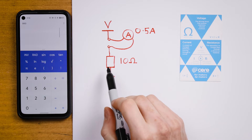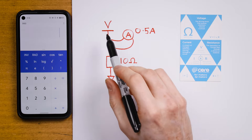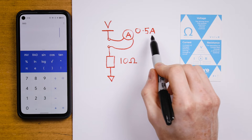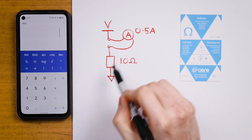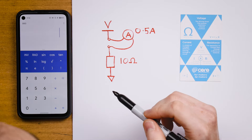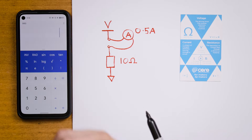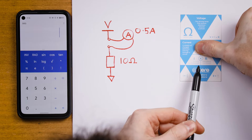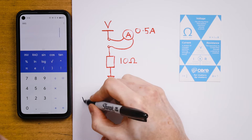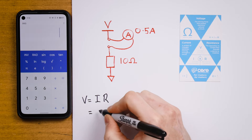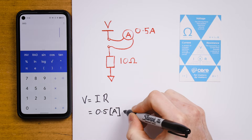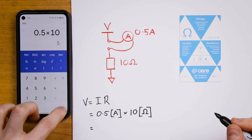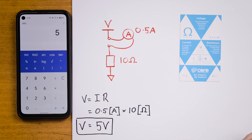In this next example, we have a known resistance with some voltage being applied across it and we're measuring 0.5 amps flowing through that resistor using a current meter. If we wanted to know this voltage, we cover the V because we're solving for voltage and we get I times R. V equals IR equals 0.5 amps times 10 ohms — 0.5 times 10 is of course 5 volts.